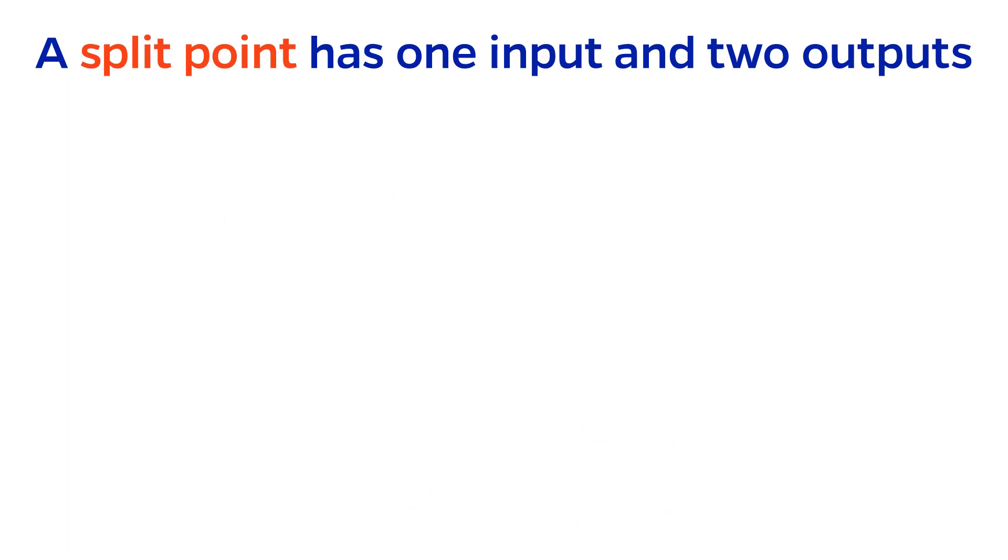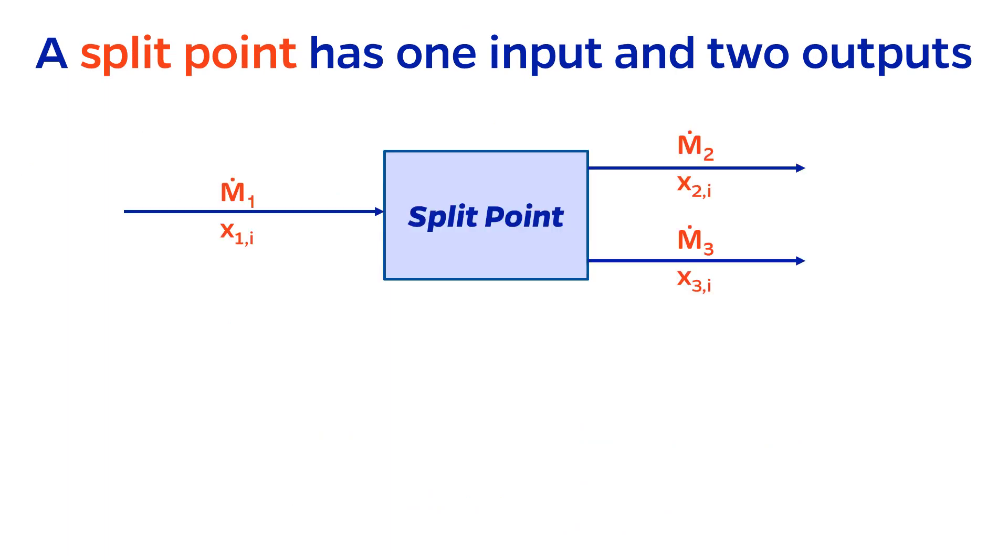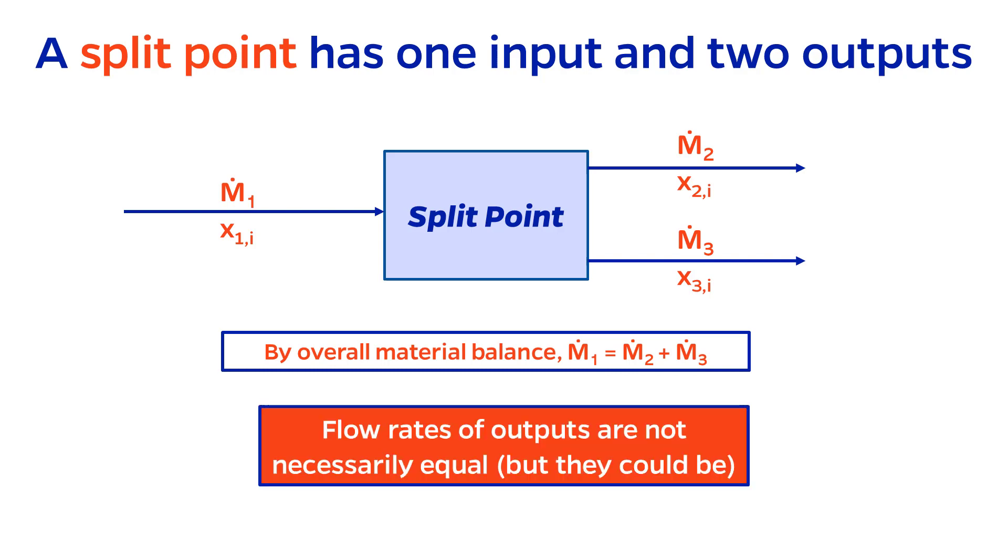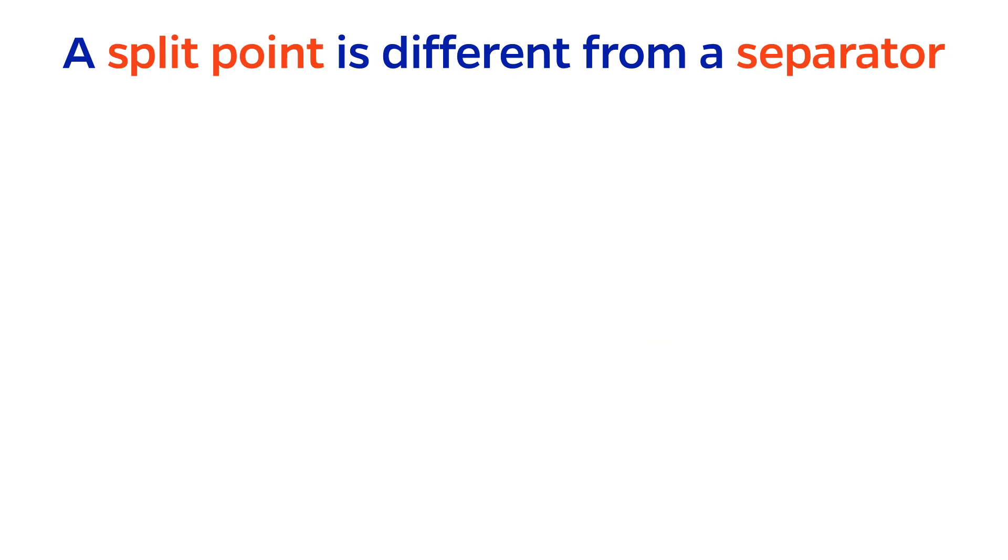The split point is the cousin of the mix point, except in reverse. There is one input and usually two outputs. Just like the mix point, the overall material balance is still relevant, but the flow rates of the exit streams do not necessarily have to be equal.